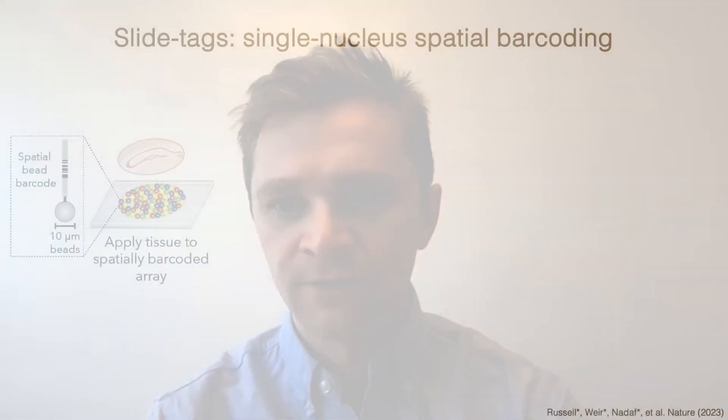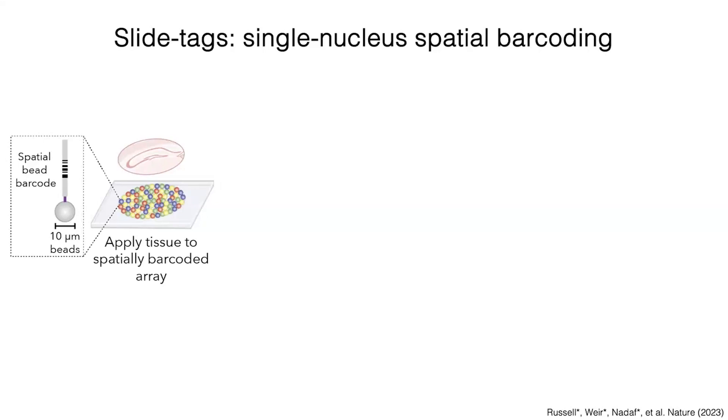In slide tags, we start with 10 micron diameter beads. We coat these beads with millions of oligonucleotides that all contain the same spatial bead barcode per bead. We then array these beads on a glass slide, and we sequence these spatial bead barcodes in situ so that we know the spatial XY location of each of these spatial bead barcodes.